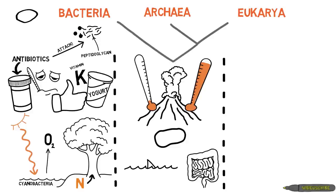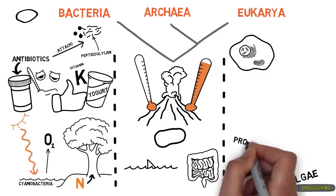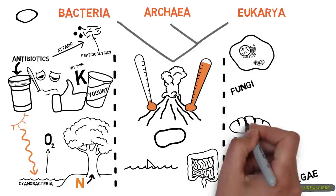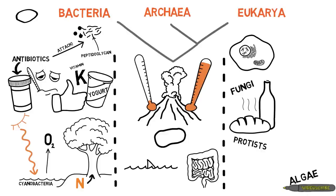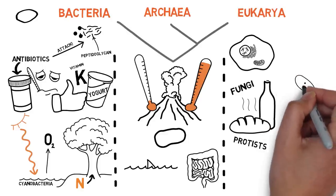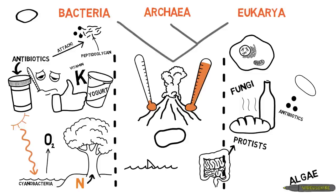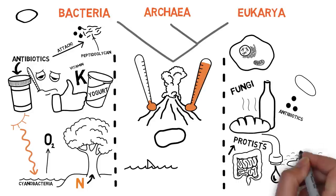Microbes within the final domain, eukarya, have a nucleus and organelles. Microbes such as algae, protists, and fungi fall into this domain. We use fungi for fermentation to make bread, beer, and wine. Remember that bacteria can produce antibiotics to kill other bacteria? Well, fungi also produce antibiotics. In fact, the first antibiotic used in medicine, penicillin, was taken from fungi. Eukaryotic protists benefit humans by helping our guts, purifying drinking water, and producing atmospheric oxygen.